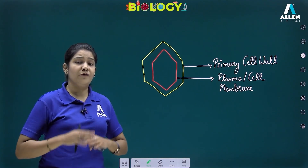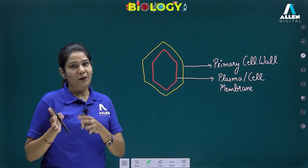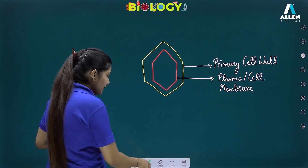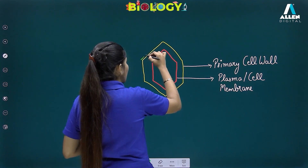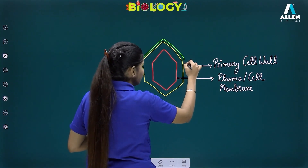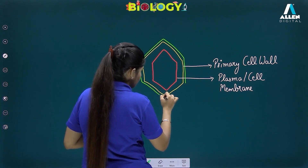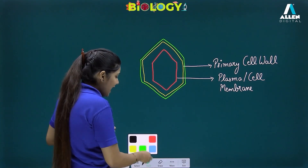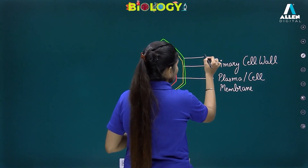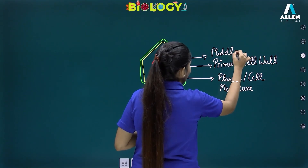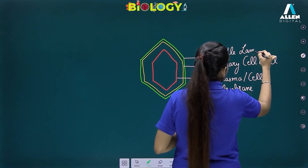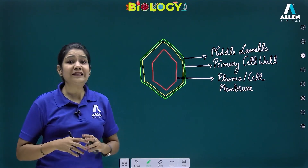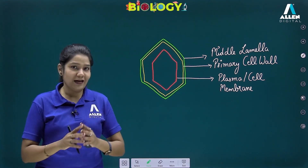The primary cell wall is made up of cellulose microfibrils, pectin, and hemicellulose. Outer to this primary cell wall, there is one more cementing layer that develops between two adjacent cells. This is called the middle lamella. The middle lamella is made up of calcium and magnesium pectate, and it acts as the cementing layer between two adjacent cells.